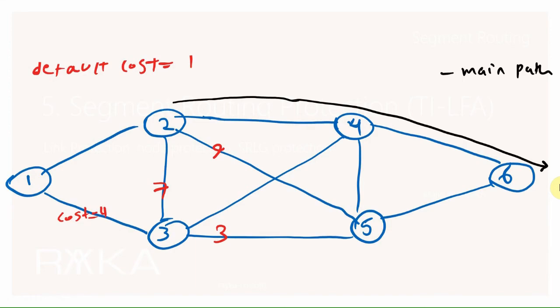What is protection? Protection means fast reroute. When a link or node fails in the network, the traffic going over that link or node is rerouted to another path in less than 15 milliseconds. We have three main types of protection: link protection, node protection, and SRLG protection, which we will discuss in a few minutes.